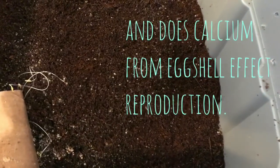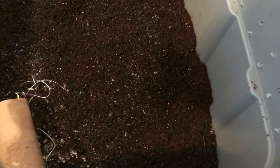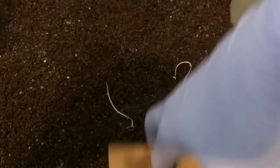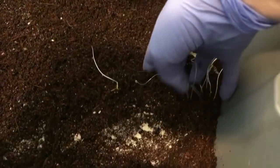You can see right away where our tomatoes were because we have sprouts. So I wanted to see how many worms we had in the area.